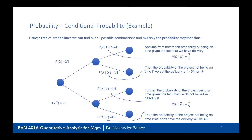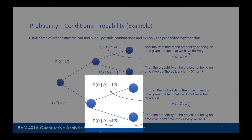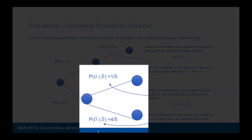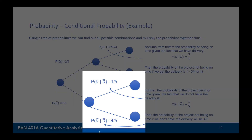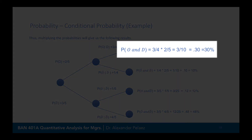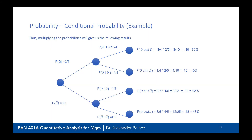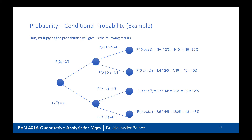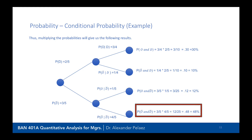On the bottom half of the tree, we separate into two segments: the probability of being on time given delivery is not on time, and not being on time given delivery is not on time — with probabilities of one-fifth and four-fifths respectively, estimated from experience. Multiplying across, the probability of being on time with on-time delivery is 30%. The probability of not being on time with on-time delivery is about 10%. Being on time with late delivery is 12% (0.12), and not being on time with late delivery is about 48% (12 out of 25).